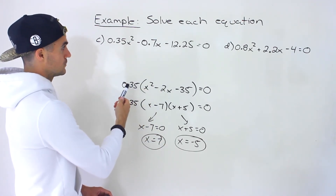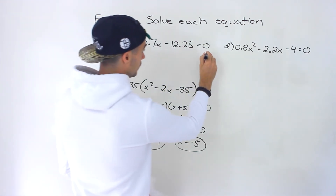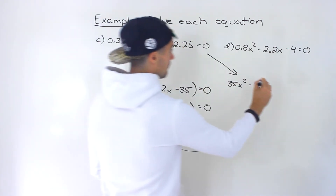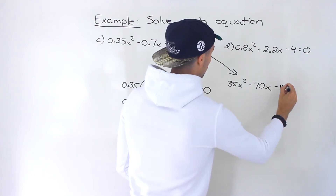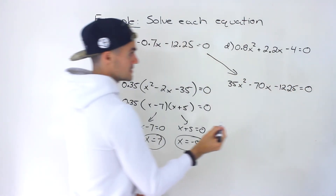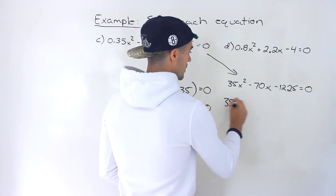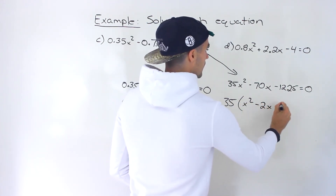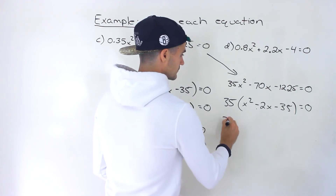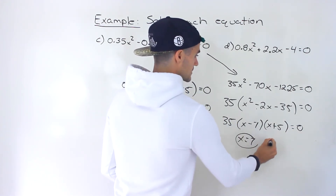What if we use the other method — multiplying everything by one hundred to get rid of all the decimals? We'd end up with thirty-five x squared minus seventy x minus one thousand two hundred twenty-five equals zero. Then we can take out a thirty-five, and we end up with that same quadratic we had before. This factors into x minus seven times x plus five, giving the same solutions: x equals seven or x equals negative five.